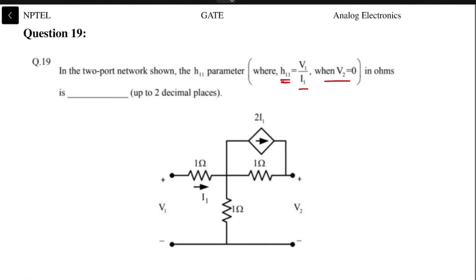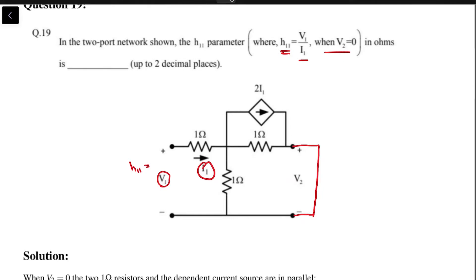So first we will make v2 zero by putting a short across the v2 terminal, and then h11 would be equal to v1 by i1. Putting a short across the v2 terminal...